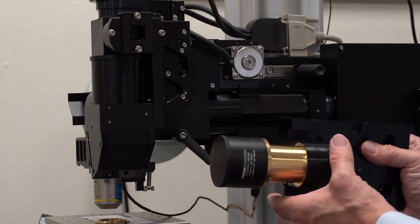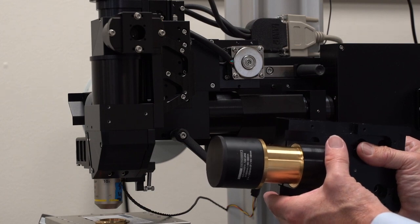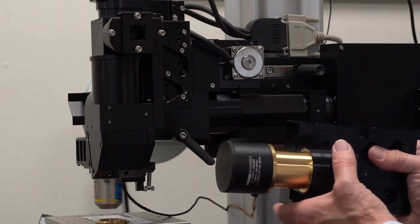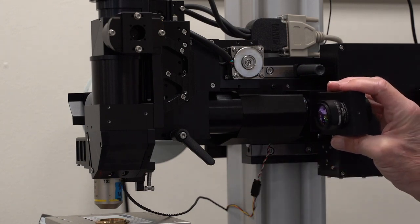We originally started building 3P MOMs using the Thorlab scan and tube lenses, but have now moved to our own optics so we can guarantee supplies. The scan lens changeover simply requires a scan lens mount with a smaller diameter hole for the alternate lens.